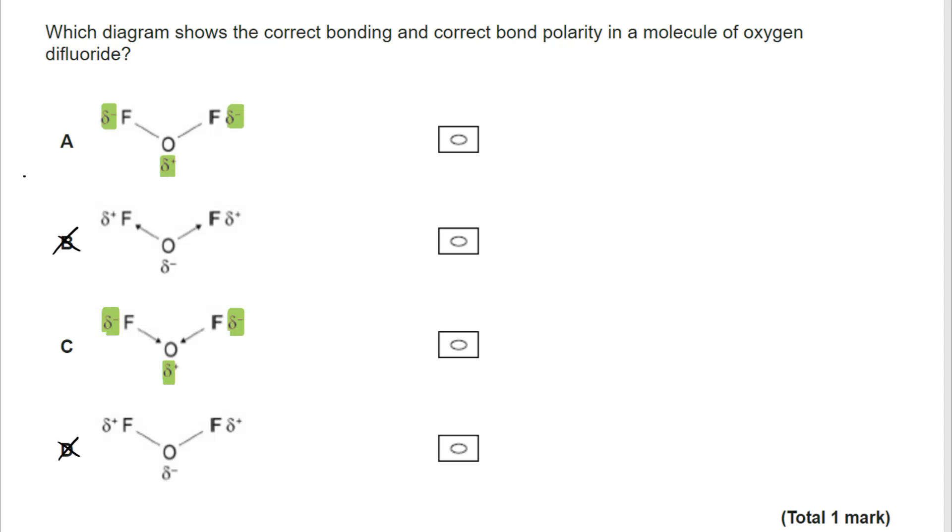We're then thinking about the bonding types that exist in here and they are not coordinate bonds. When we have the O forming the two covalent bonds, one with each F, they are just covalent bonds, they are not coordinate. So the correct answer is A.